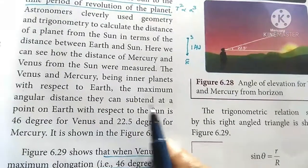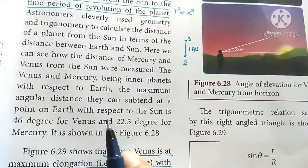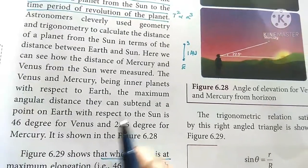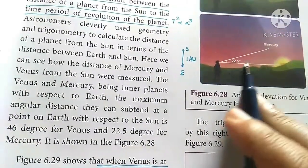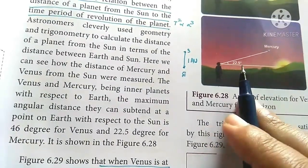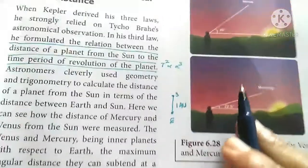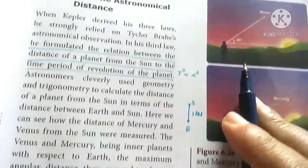The maximum angular distance they can subtend at a point on Earth. Mercury is 22.5 degrees. Venus is 46 degrees.